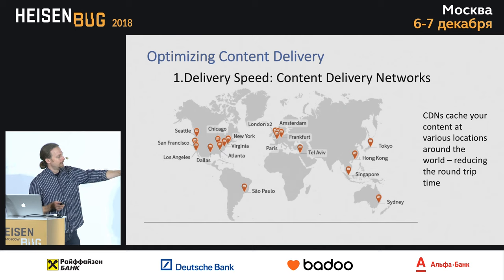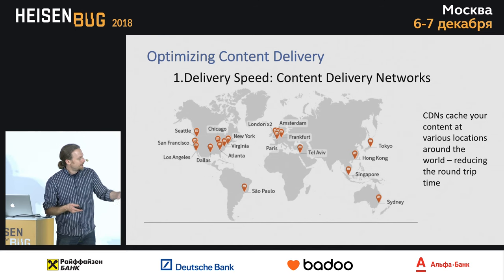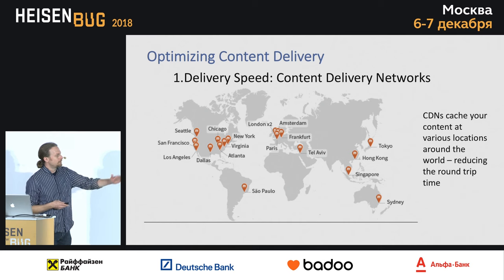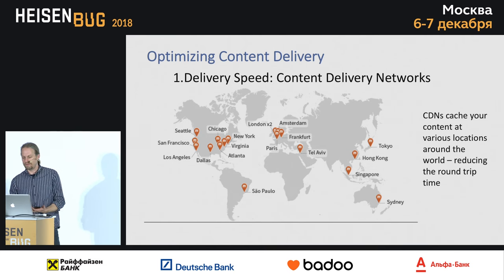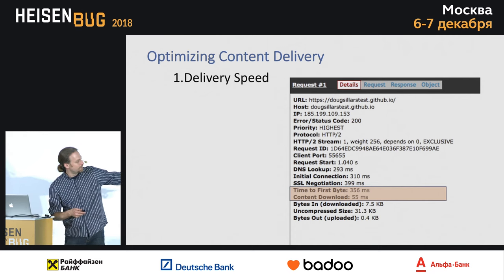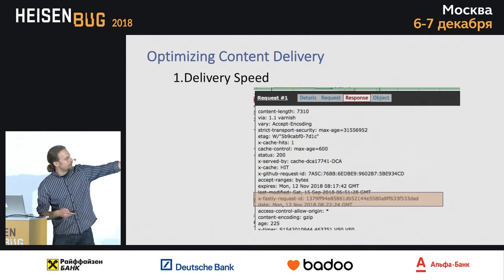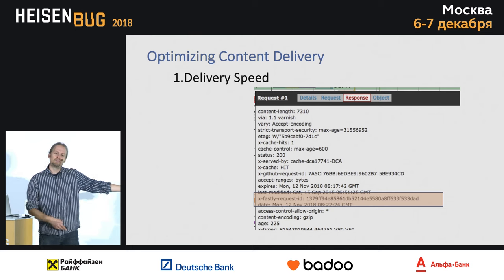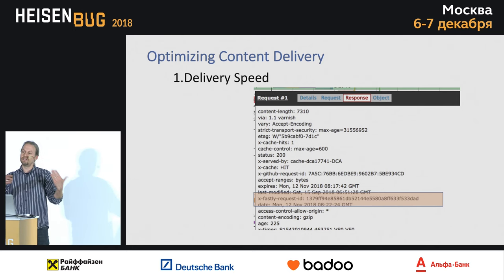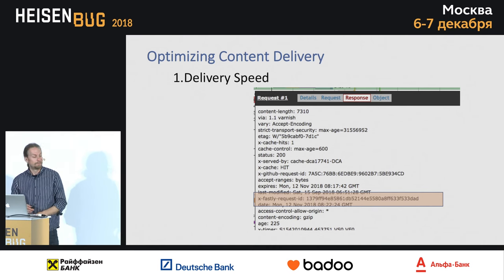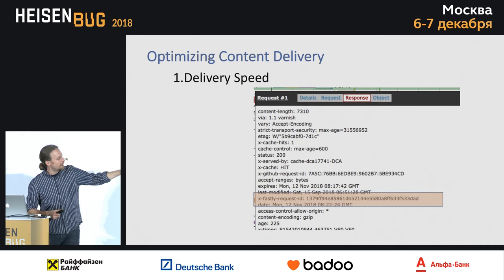A CDN has different points of presence — called POPs — all around the world. If your content is here in Russia, it would probably be served from Amsterdam. If your customers are in America, it'll come from Seattle or New York. The content doesn't have to travel as far, so it gets there faster. Looking at a sample web page I built, the time to first byte and content download is 350 milliseconds, and the response shows it's coming from Fastly — a CDN — and it was a cache hit, so it was stored at a nearby server. You get all this information from WebPageTest through the headers of the delivered content.